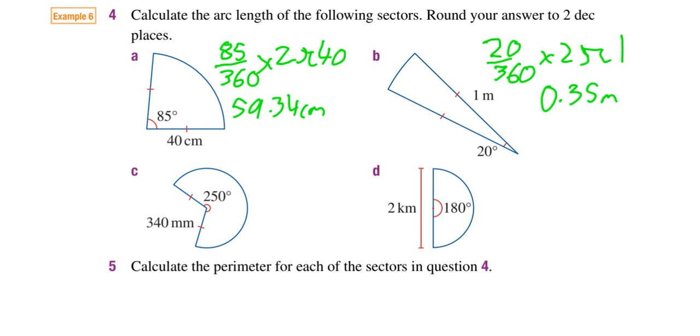When it comes to C, same sort of thing again. 250 out of 360, almost three-quarters of that circle.